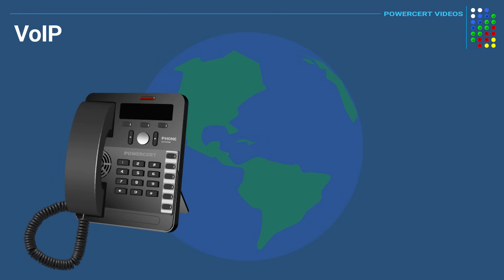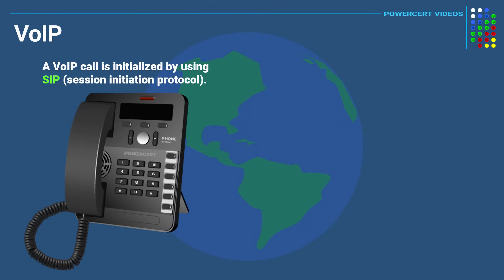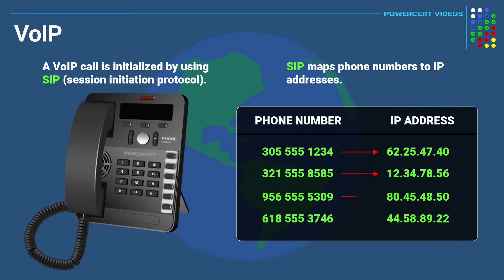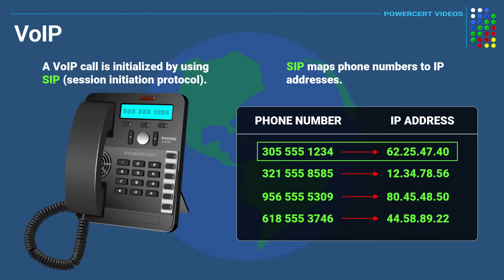A VoIP call is initialized using a protocol called SIP, which stands for Session Initiation Protocol. SIP does all the work behind the scenes when starting a VoIP call. One of the main things SIP does is map phone numbers to IP addresses — similar to how DNS works, where a domain name like google.com is mapped to an IP address. When you dial a number, SIP finds the matching IP address of the recipient to locate and connect the call.